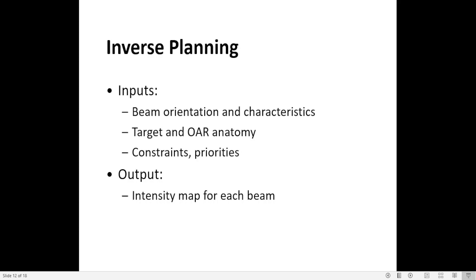So it helps the optimizer define which of them is more important or as important as. Planners often adjust constraints and priorities during optimization and attempt to drive the plan to its optimal solution. The output in inverse planning is intensity map for each beam.